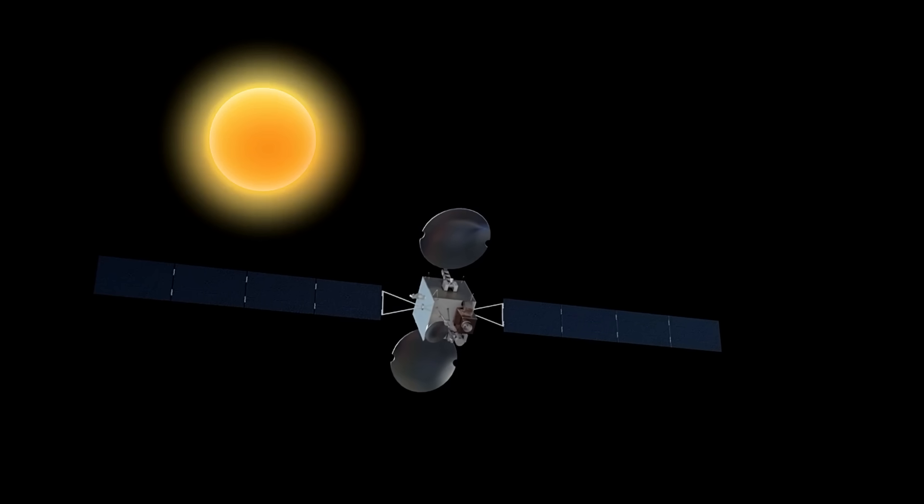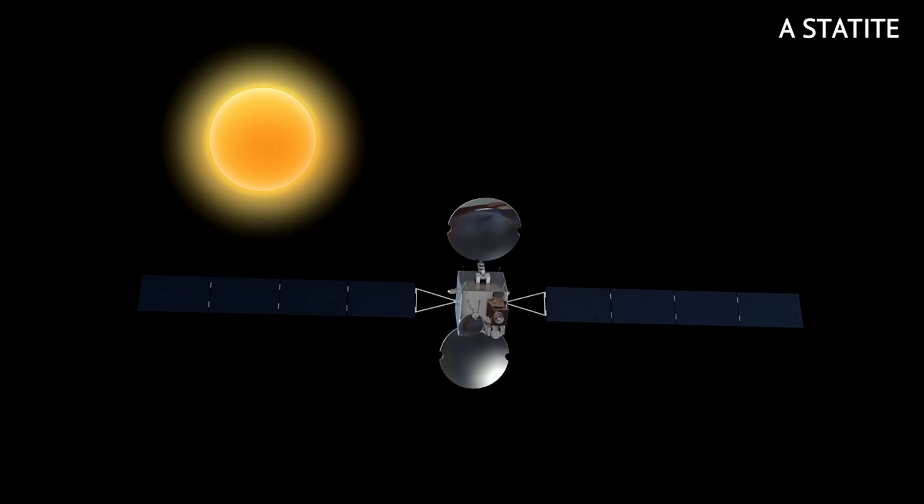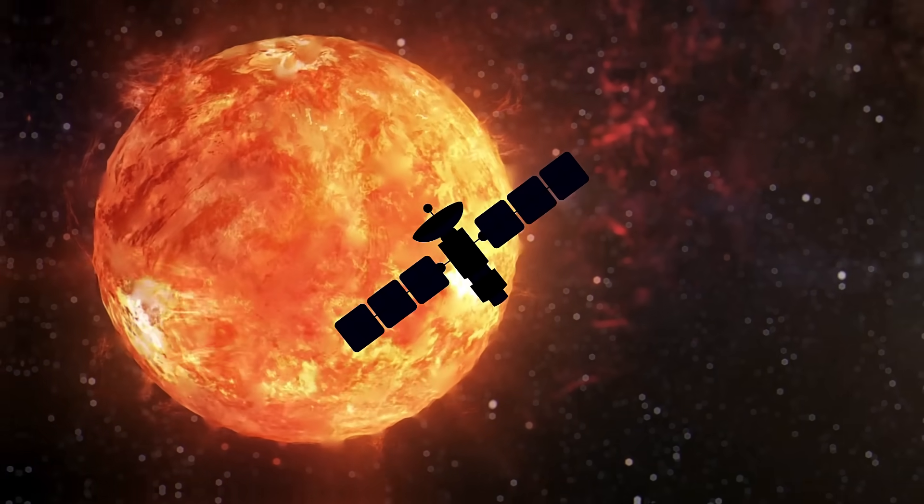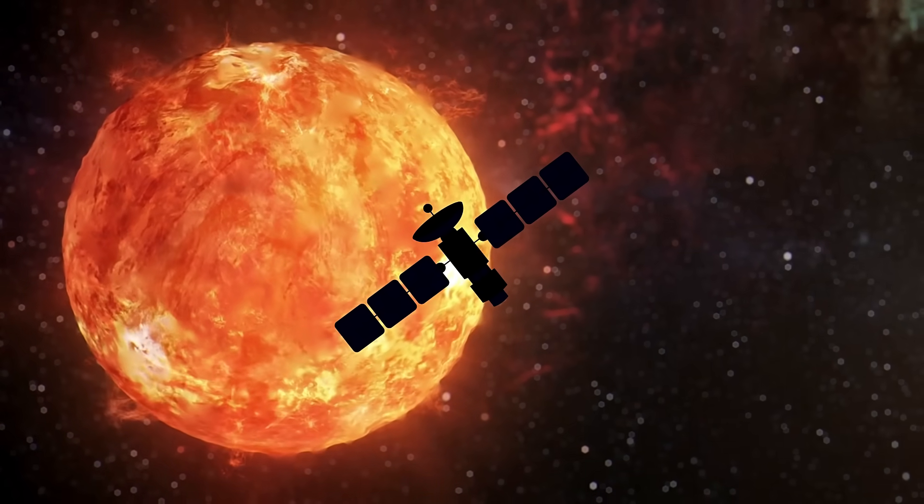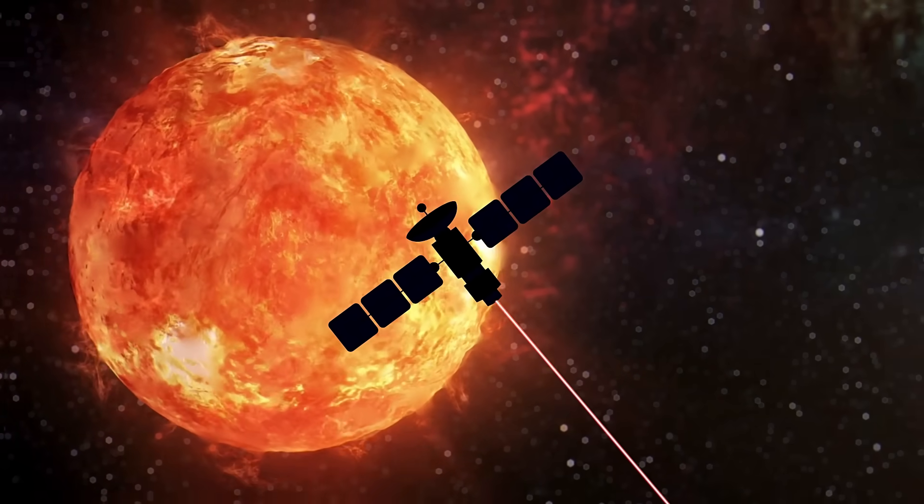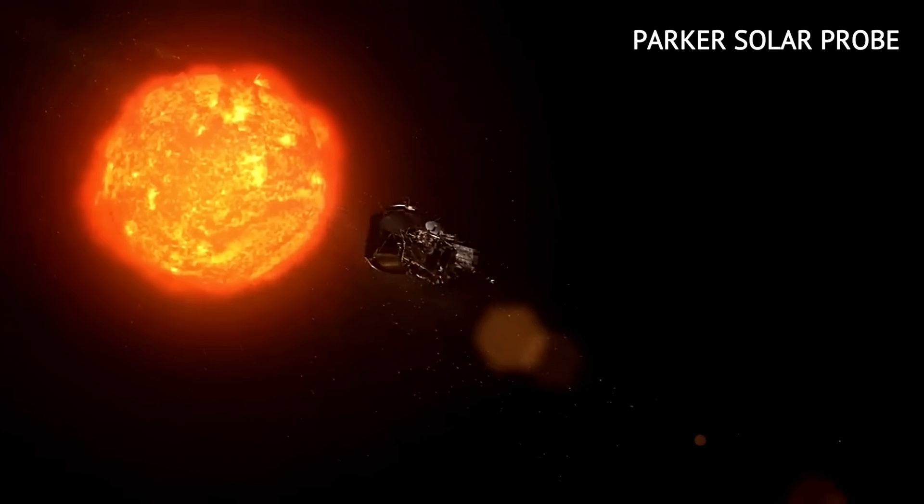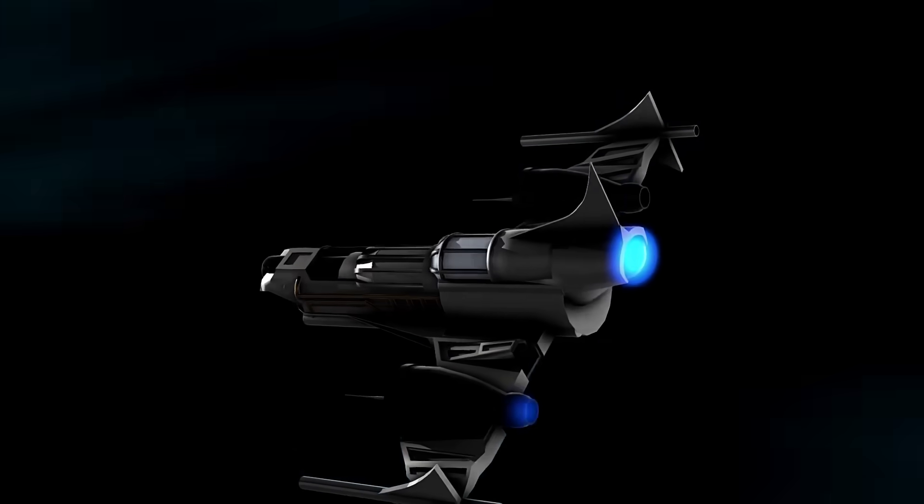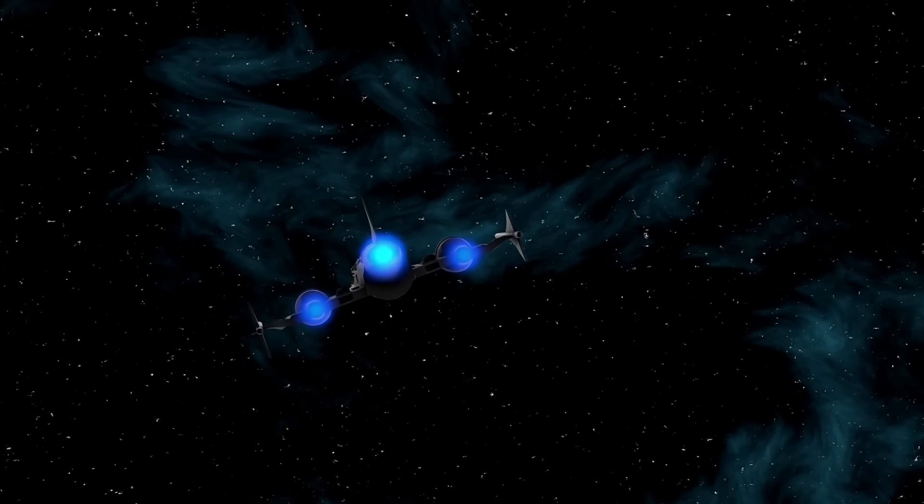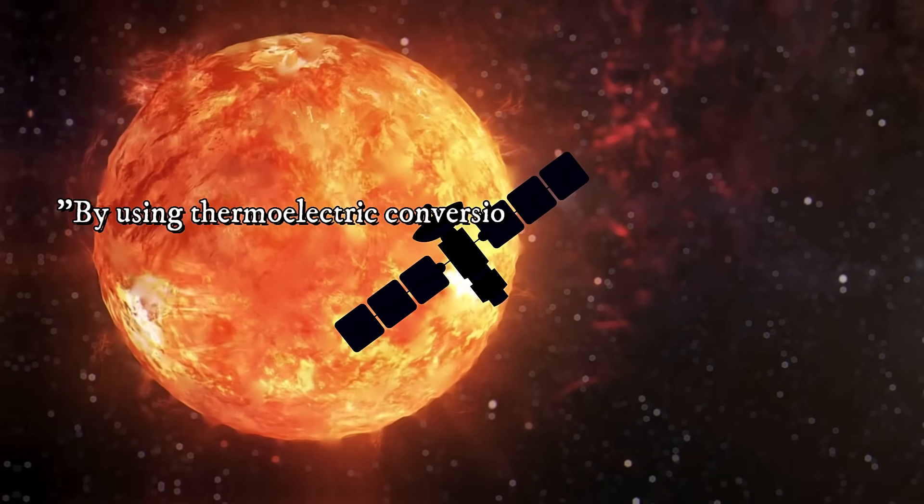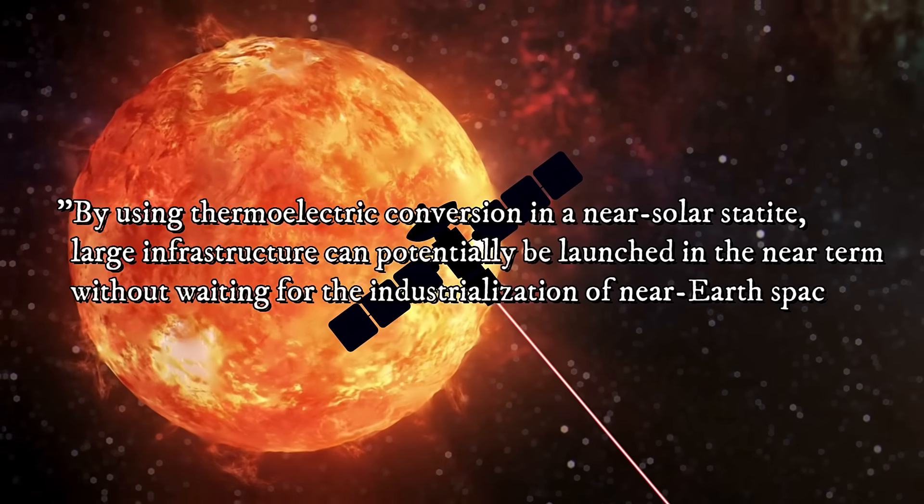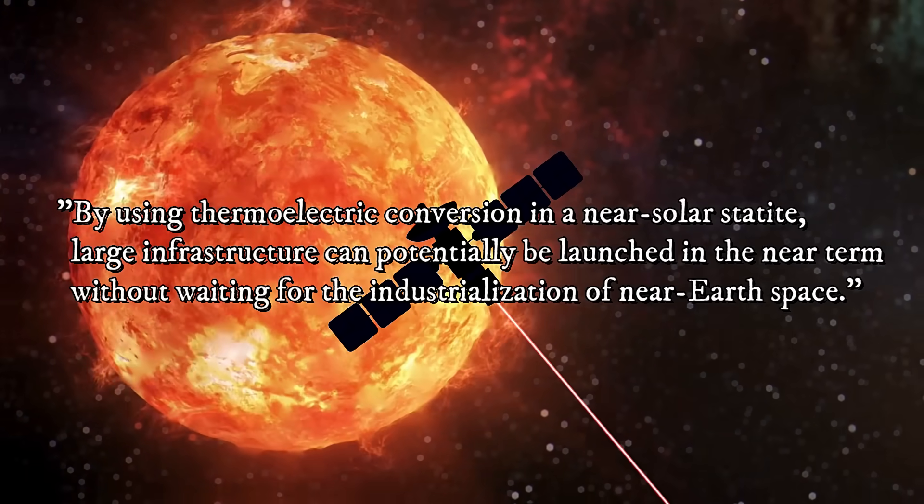A key part of sunbeam success relies on a stationary satellite, known as a statite, placed close to the sun. Unlike regular satellites that orbit, the statite hovers in place by using the sun's radiation pressure and magnetic fields. From its position, it can direct the electron beam towards the spacecraft. The statite would sit as close as the Parker Solar Probe's closest approach to the sun, meaning we would need to develop materials capable of withstanding that intense heat. Achieving this setup could potentially shorten travel time from millennia to mere decades. By using thermoelectric conversion in a near-solar stationary satellite, large beam infrastructure can potentially be launched in the near term, without waiting for the industrialization of near-Earth space, said the research team.